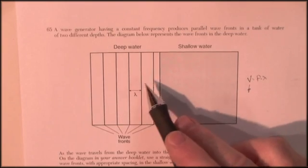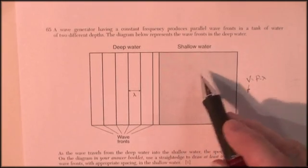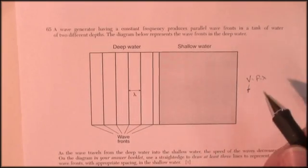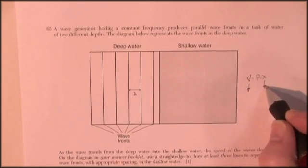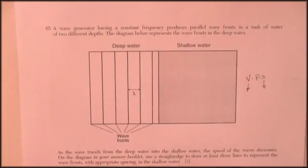If I've got 10 waves per second here I better have 10 waves per second here. Otherwise I've got waves just hanging out, they've got nowhere to go. I've got to have the same frequency. So the velocity goes down, so does the wavelength. They become closer together.